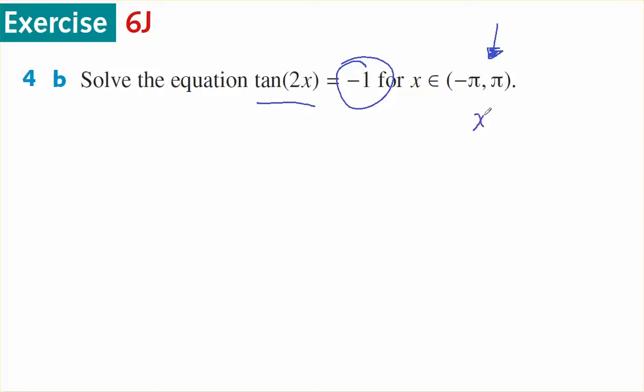Since x goes from -π to π, but this is about 2x, then if I double this, 2x will go from -2π to 2π.